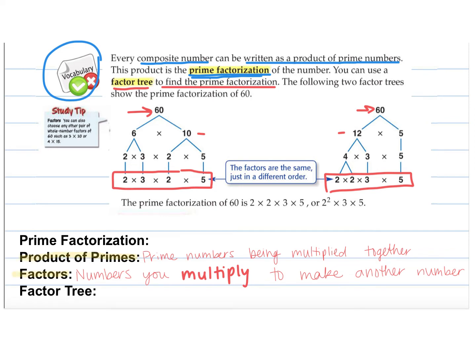I also want you to write down the vocab words. Product of primes — prime numbers that are being multiplied together, that's like what this is right here. And then factors — those are the numbers that you multiply together to make another number.